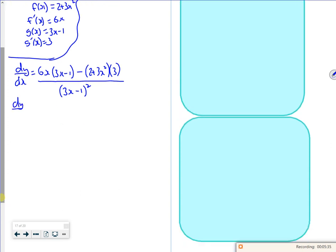All right, let's do a bit of expanding the brackets. So dy by dx is 18x squared minus 6x minus 6 minus 9x squared over 3x minus 1 whole squared. So dy by dx, and we'll tidy it up, is 9x squared minus 6x minus 6 all over 3x minus 1 whole squared.